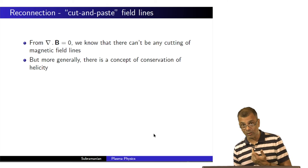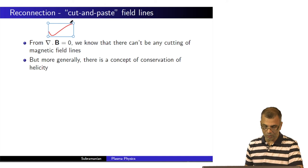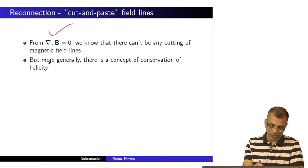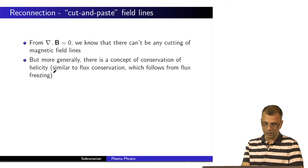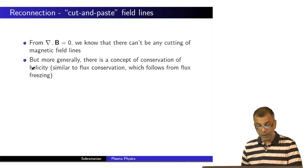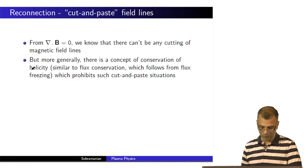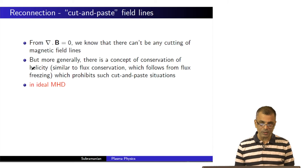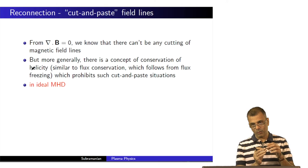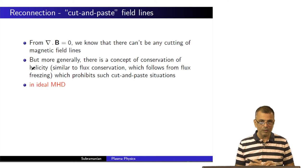There are several reasons reconnection is not allowed in ideal MHD. Number one, it violates divergence of B equals zero. Number two, in ideal MHD, just like there is conservation of flux, there is also conservation of a related quantity called helicity. Conservation of helicity explicitly forbids cutting and pasting of field lines. In ideal MHD, the tenets are really valid only in the bulk fluid, and in small areas where the reconnection is actually happening, the laws of ideal MHD can be violated because of finite resistivity effects or kinetic effects.